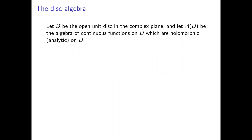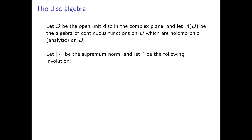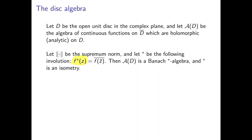Let's look at the disk algebra. We denote by D the open unit disc in the complex plane, and we let A(D) be the algebra of continuous functions on the closure of D that are holomorphic on the open disk. The norm is the supremum norm, and the star operator is defined as: the star of f evaluated at z equals the complex conjugate of f evaluated at the complex conjugate of z. This is an isometric involution, making A(D) a Banach star algebra.